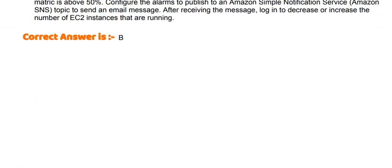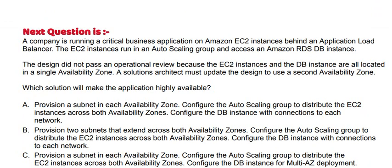Next question: A company is running a critical business application on Amazon EC2 instances behind an application load balancer. The EC2 instances run in an auto-scaling group and access an Amazon RDS DB instance. The design did not pass an operational review because the EC2 instances and the DB instances are all located in a single availability zone. A solutions architect must update the design to use a second availability zone. Which solution will make the application highly available?